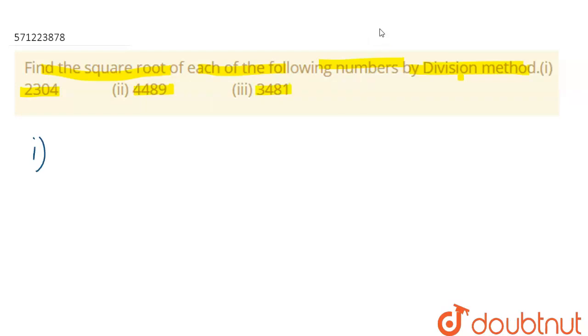First we have 2304. For division method, let's start the division. Here first of all we will divide. We have four numbers so we will divide these into two parts. Now we will see this 23 and we will take those type of pairs like 2×2, 3×3, like this pairs that makes or gives us 23 or equal to 23 or less than 23.